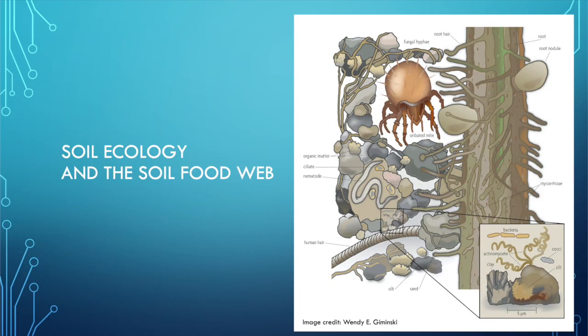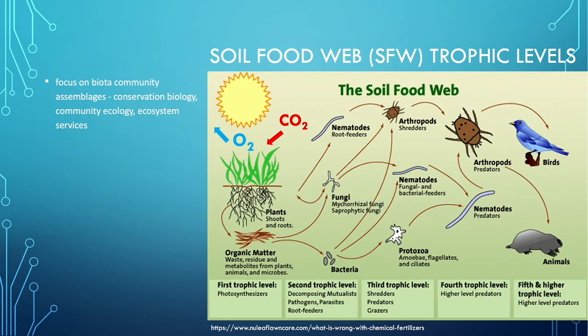We're going to talk about the concept of ecology in deeper detail — how interaction occurs between the plant and the associated microbes, and then the different organisms that feed on the microbes and so on, in order to show how intertwined and interconnected the soil food web system really is, and how we can get these organisms out into the soil ecosystem. This spans across different disciplines: conservation biology, community ecology, and ecosystem services, and these really need to be integrated in order for the system to be understood on all levels.